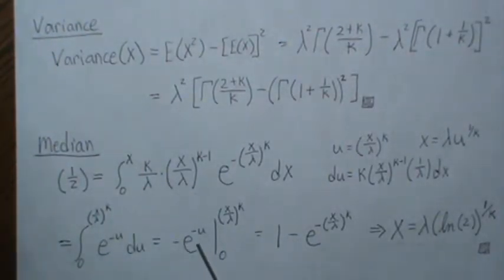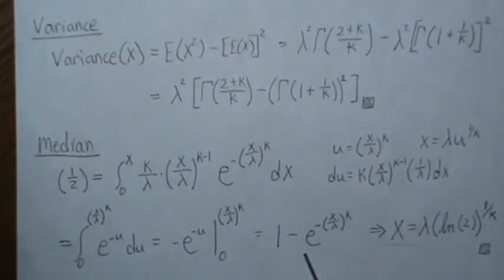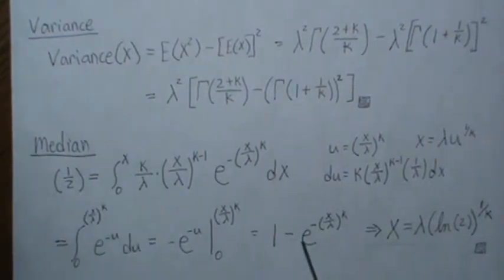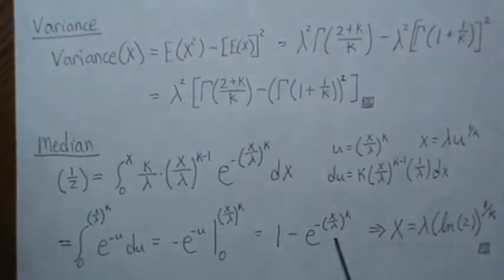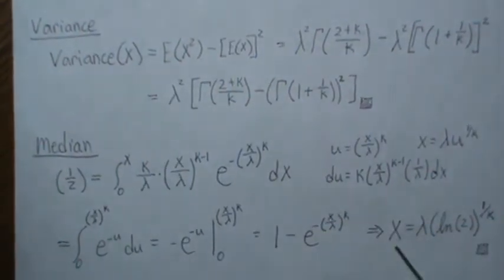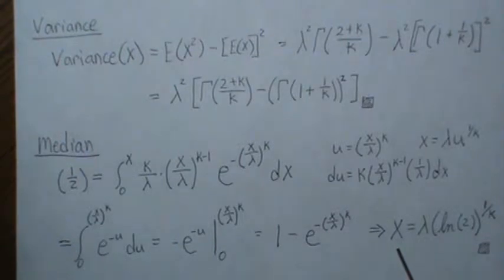So you integrate this, you get minus e to the minus u, these limits of integration. So then you plug this in here, and you get minus that, which is this piece here, and then it's minus, then stick in the u, and minus a minus is 1, so you get 1 minus this. Now, this is equal to 1, so if you take this to the other side and subtract half, and then take the 1 over kth root, you can solve for x, and you get this.